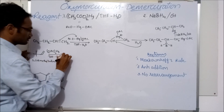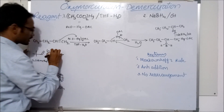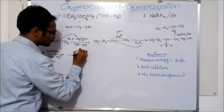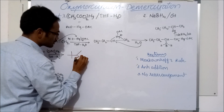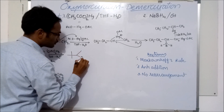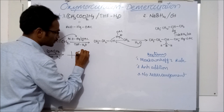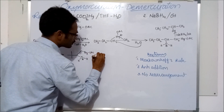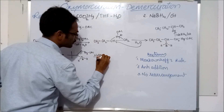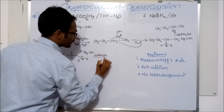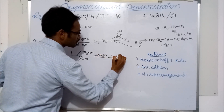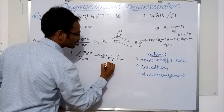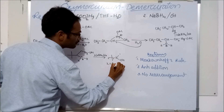3,3-dimethylbutene on reaction with mercuric acetate in the presence of tetrahydrofuran and water gives an intermediate with –OH and –Hg(OAc). Upon reaction with sodium borohydride in the presence of OH⁻, we get the alcohol product: 3,3-dimethyl-2-butanol.